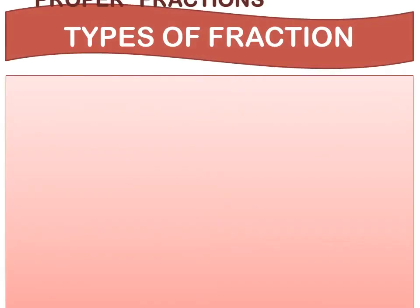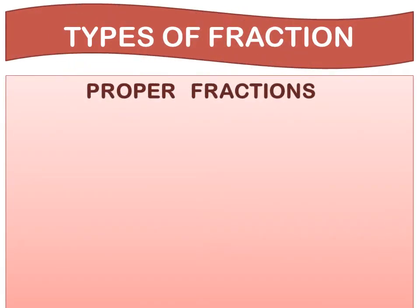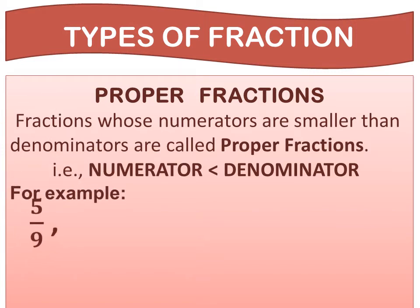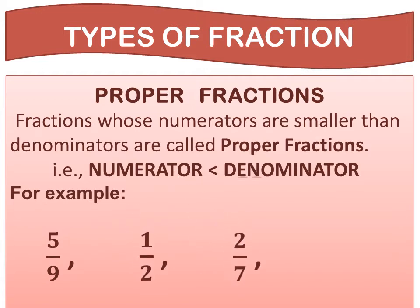The next is proper fractions. Fractions whose numerators are smaller than denominators are called proper fractions. For example, 5 upon 9, 1 upon 2, 2 upon 7, and 7 upon 11. In each case, the numerators are smaller than the denominators.